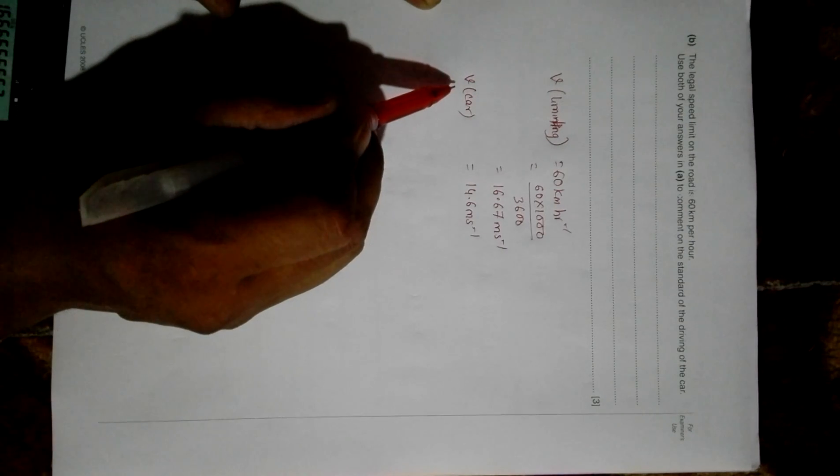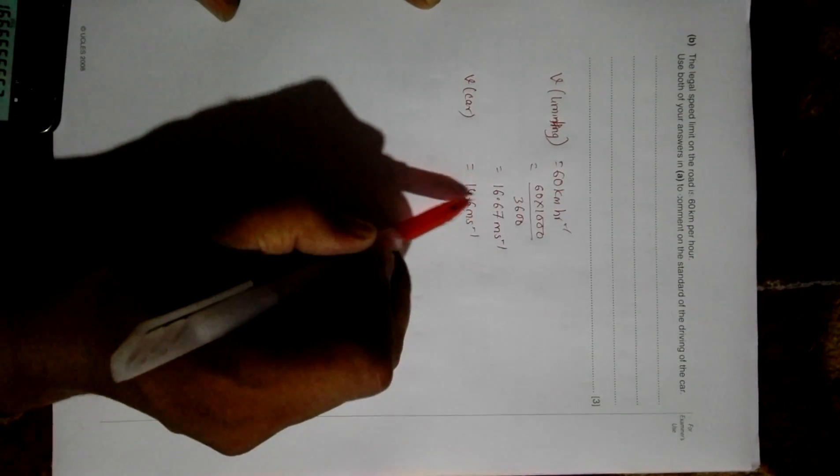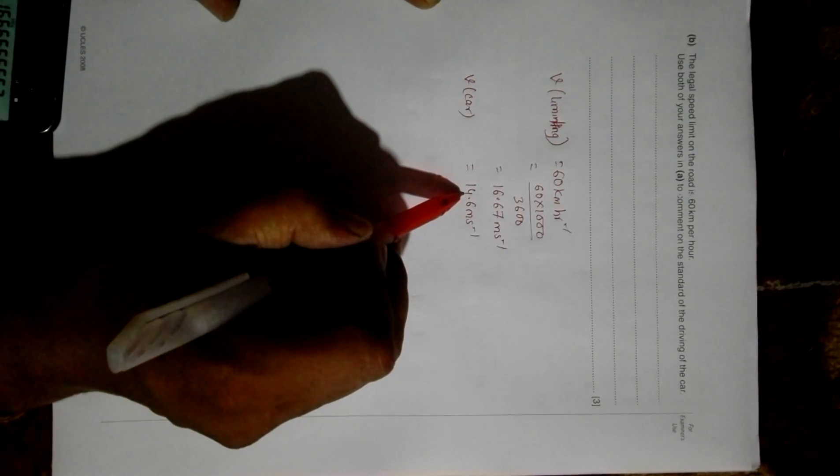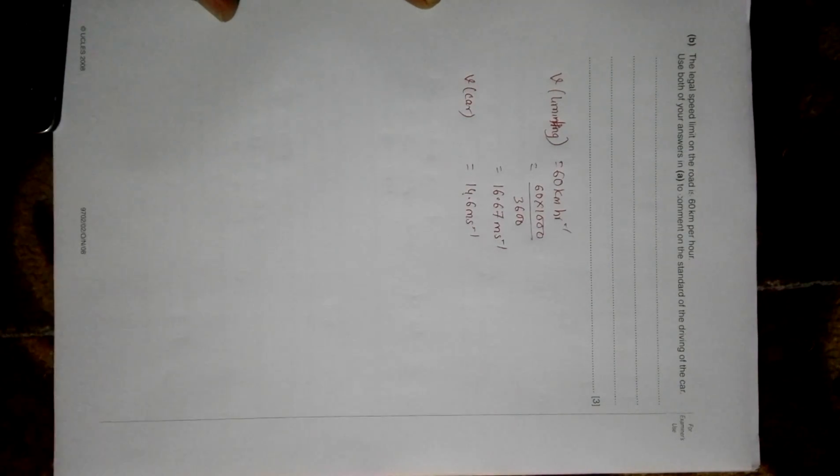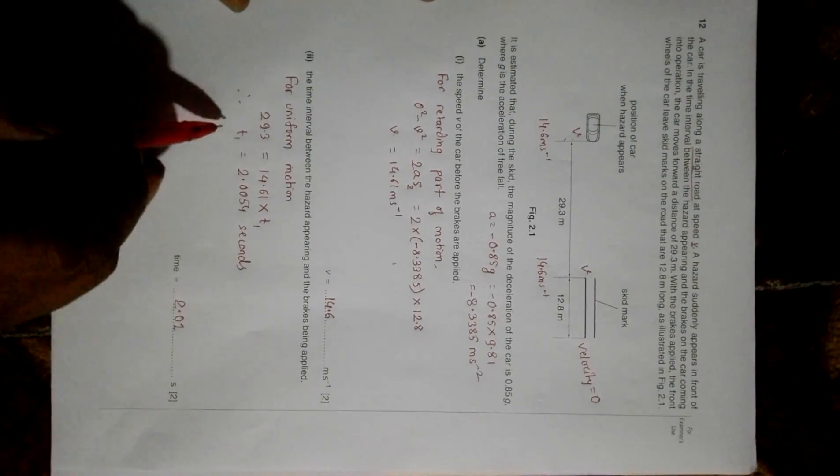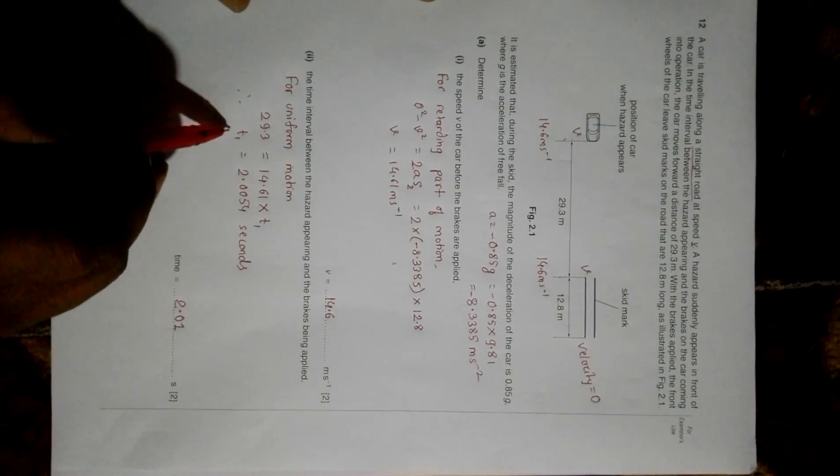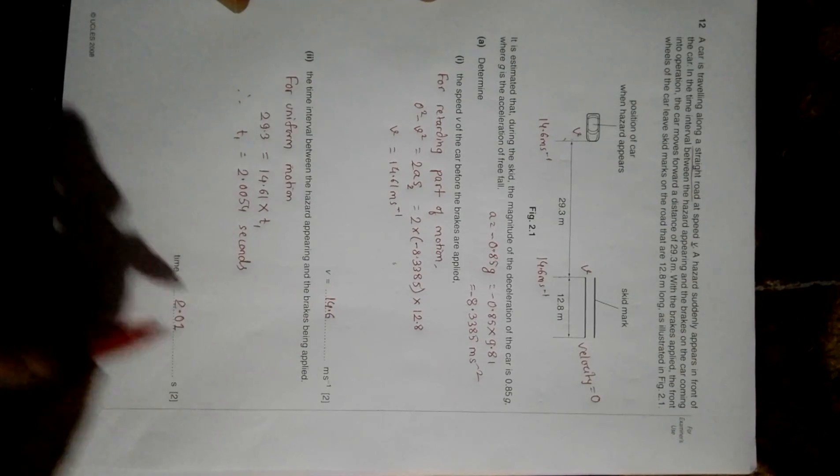Let's go back. We have the velocity equal to 14.6 meters per second. So the velocity of the car was 14.6 meters per second, which means the velocity of the car is within the limit. In that sense, the standard of the driver is okay, but what we have here is...